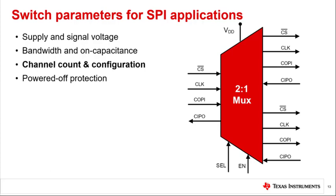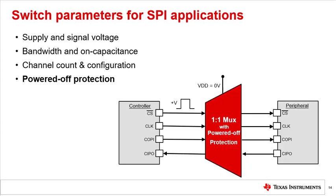The number of channels is also a consideration for SPI multiplexing. For example, a 4-channel 2-to-1 switch may be used to switch between two followers in a typical 4-channel SPI communication. A 6-channel device may be used if more data lines are required or in QSPI applications. Finally, additional protection may be required in high-performance systems with external non-volatile memory. To simplify power sequencing and protect your system in such use cases, look for a switch with powered-off protection. You can learn more about powered-off protection in the TI Precision Labs training video, 'Simplify Power Sequencing with Powered Off Protection'.